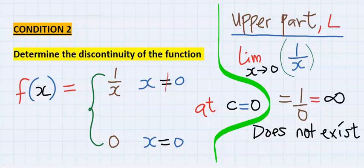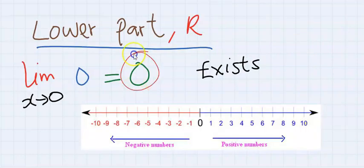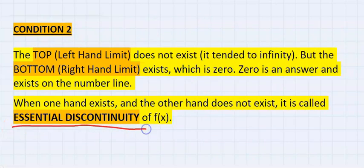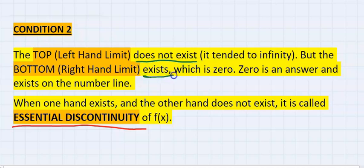Hence, when one part of the function does not exist, and the other exists, this is known as essential discontinuity. Because one does not exist, and the other exists.